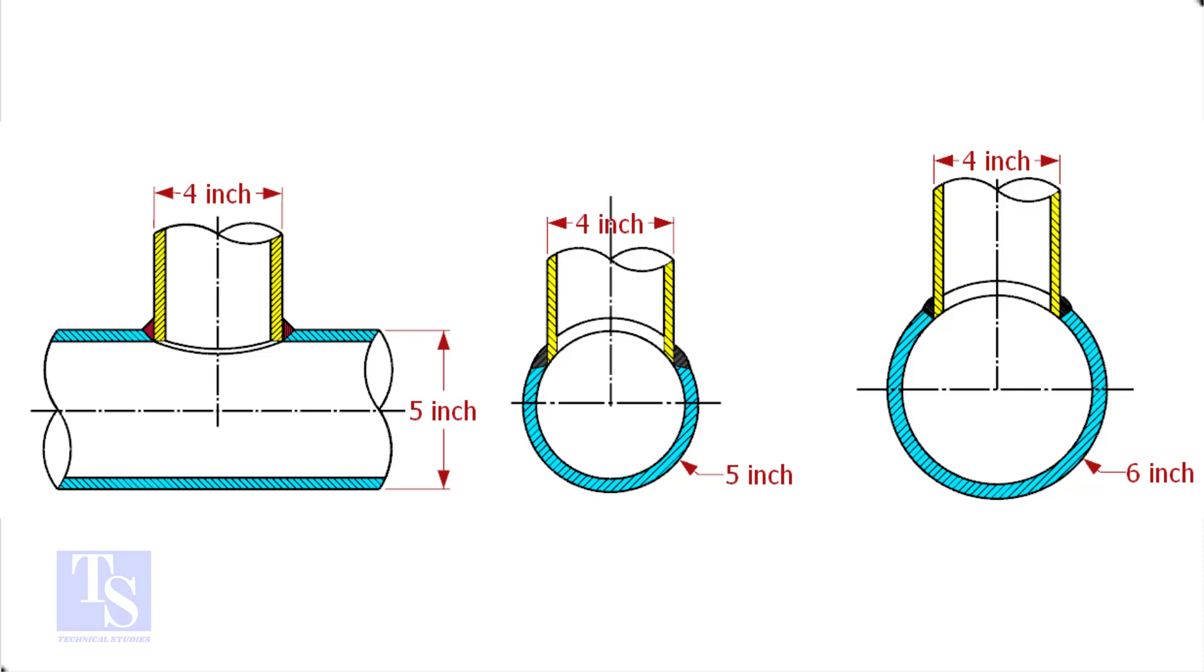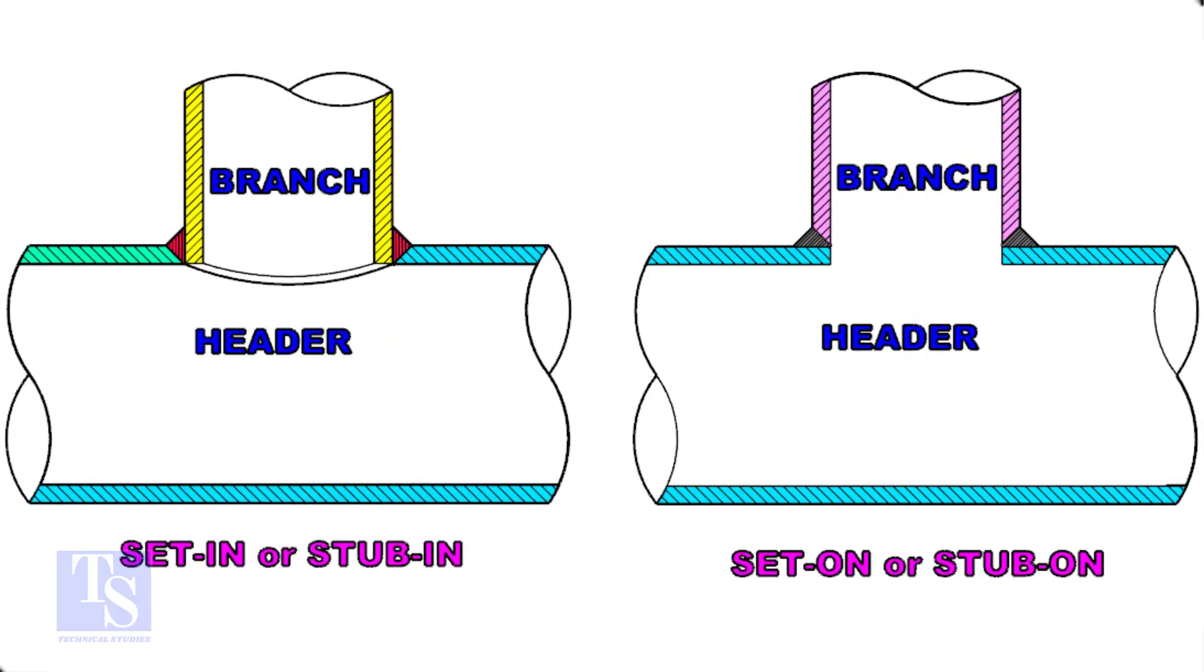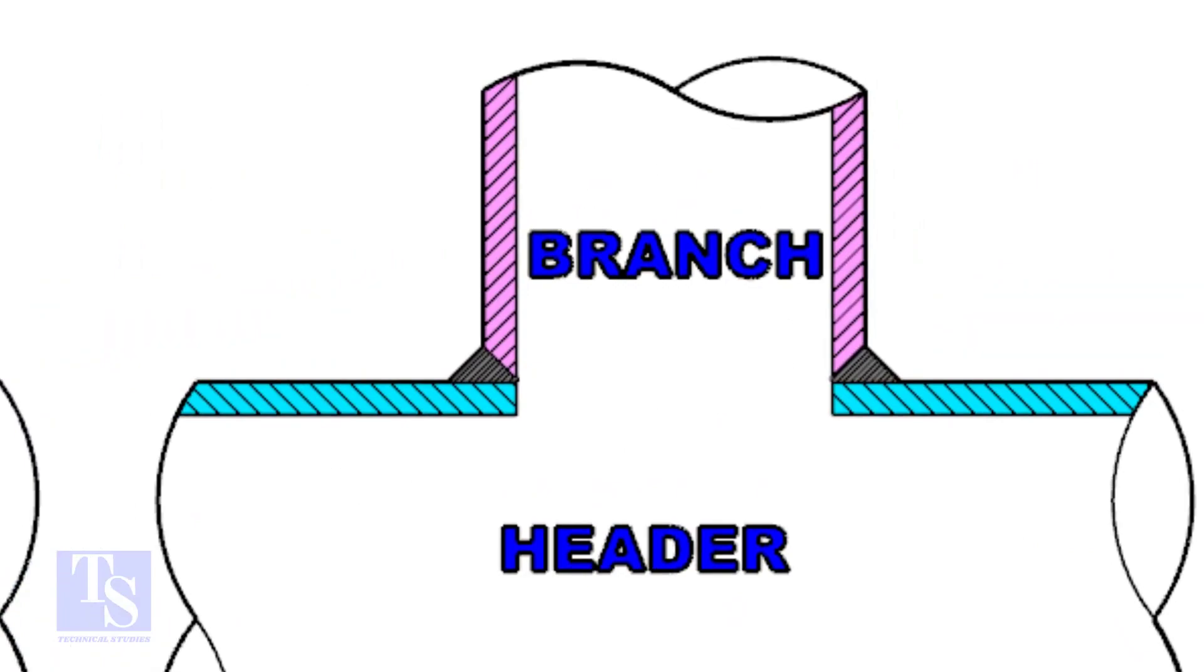Watch the section side view carefully. Check the stub-on view. The branch pipe sits on the header.